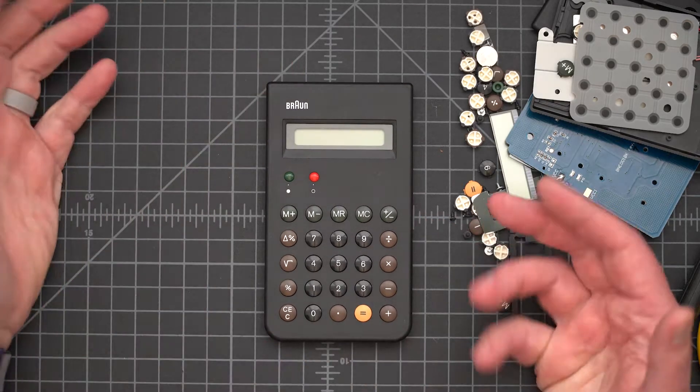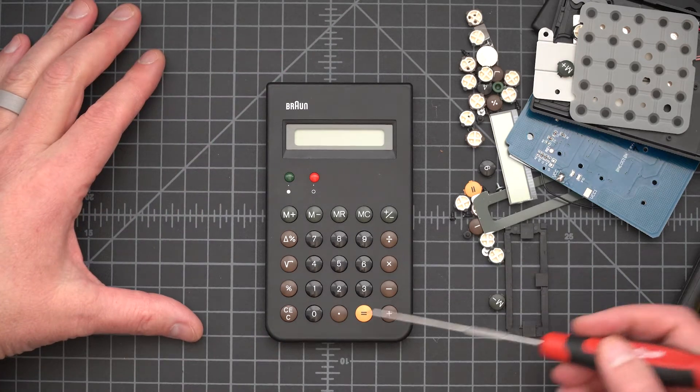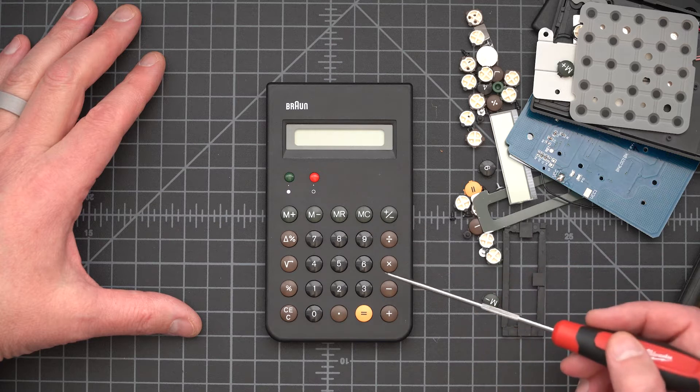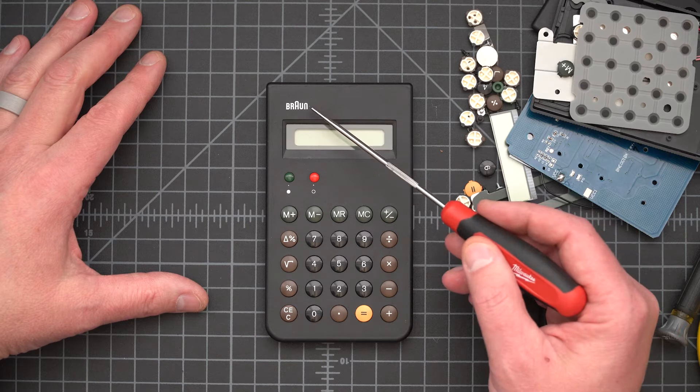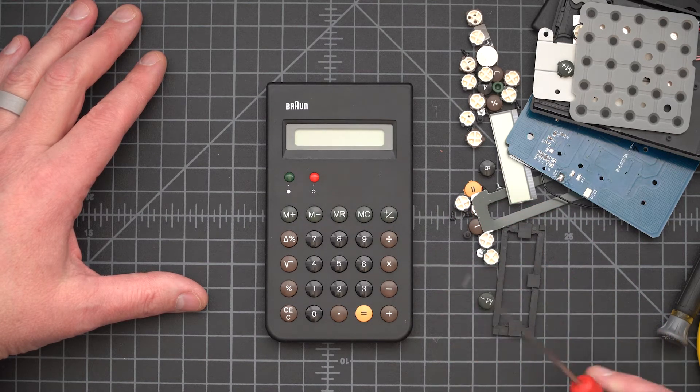Here is the calculator in its assembled form. We can see the buttons with the different colors, the placement of each particular button. We can see the LCD screen area. We can also see the Braun logo applied here and then the on-off and clear buttons here.